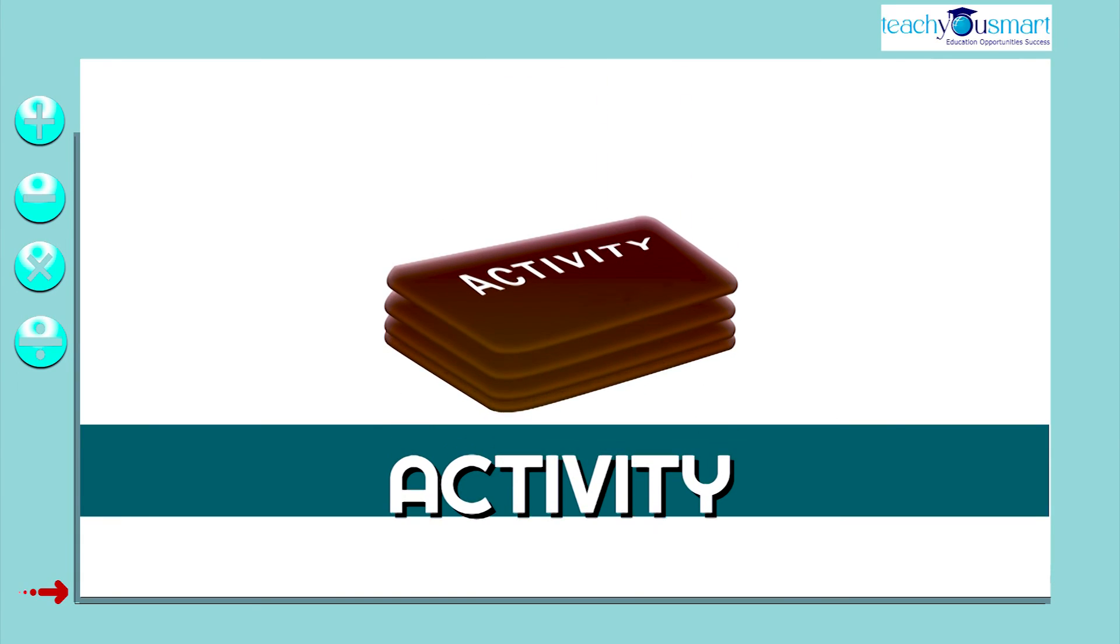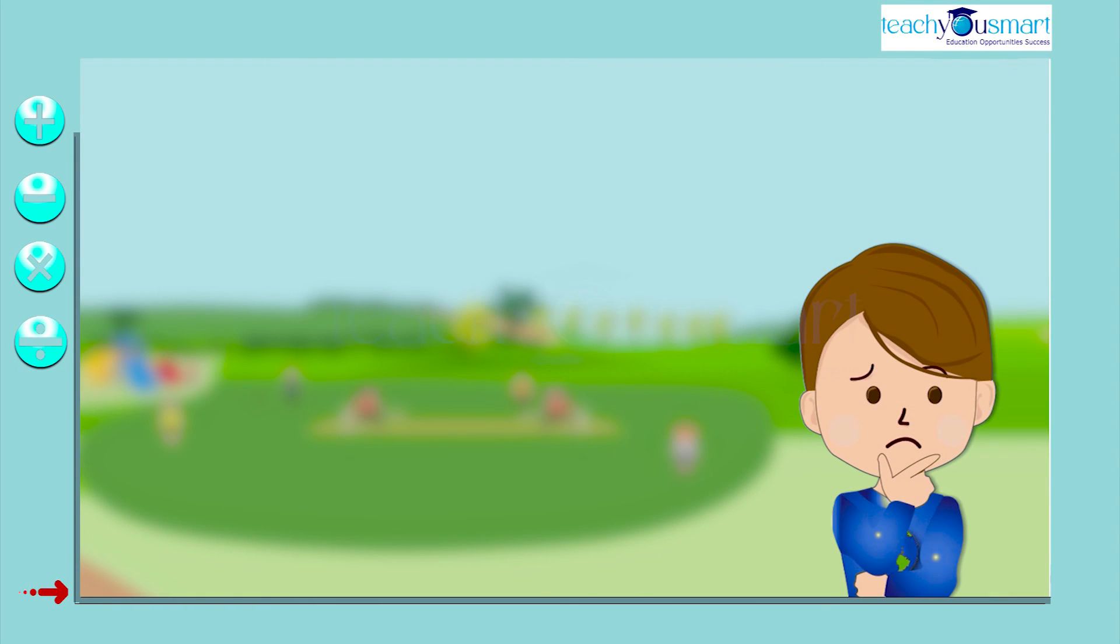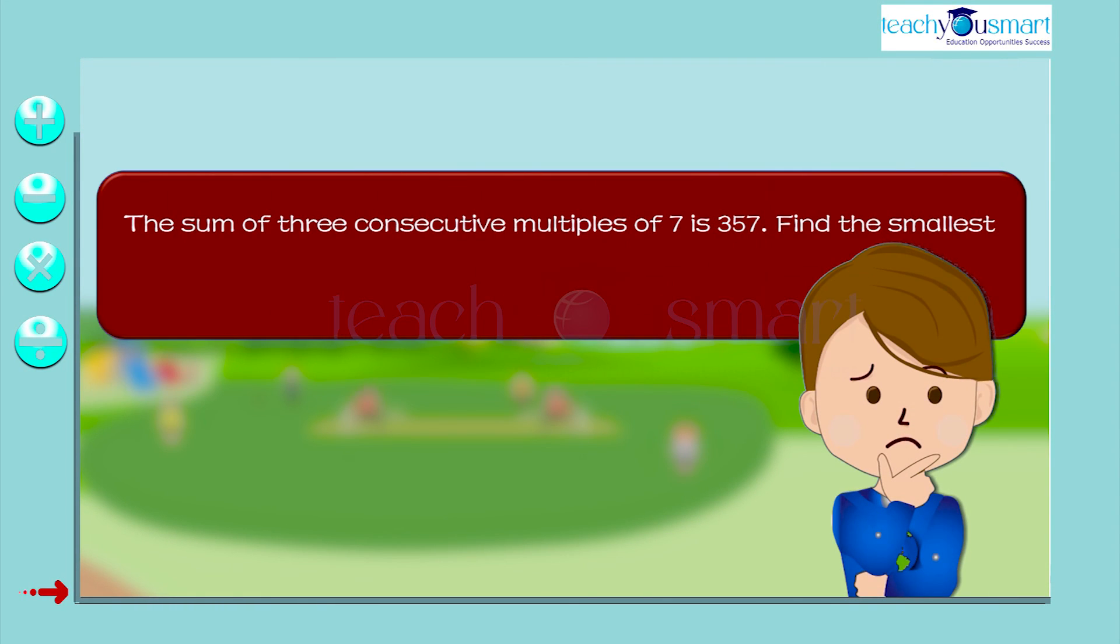Before winding up, let's do an activity to find out how much you understood. The sum of three consecutive multiples of seven is 357, find the smallest multiple.